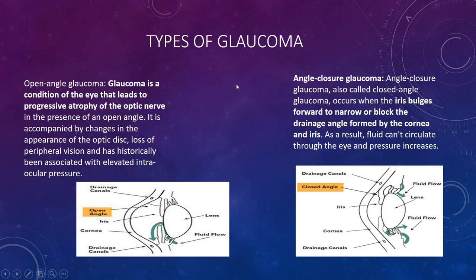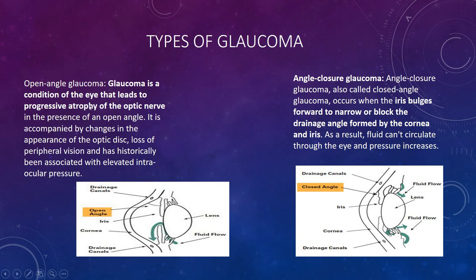Glaucoma is majorly of two types: open-angle glaucoma and angle-closure glaucoma. Open-angle glaucoma leads to progressive atrophy of the optic nerves in the presence of an open angle. It is accompanied by changes in the appearance of the optic disc, loss of peripheral vision, and has historically been associated with elevated intraocular pressure. In open-angle glaucoma, the drainage channels are locked, as illustrated here with the lens and fluid flow.